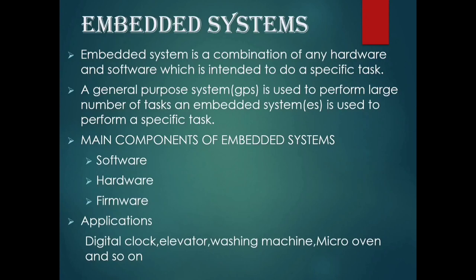Embedded Systems: An embedded system is a combination of hardware and software intended to perform a specific task. A general-purpose system performs a large number of tasks, whereas an embedded system performs a specific task. The main components of embedded systems are software, hardware, and firmware. Applications include digital clocks, elevators, washing machines, microwaves, and more.